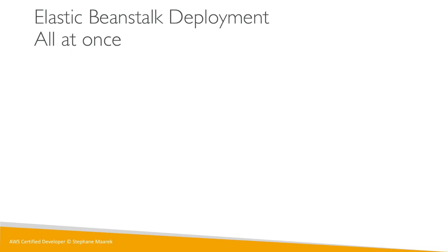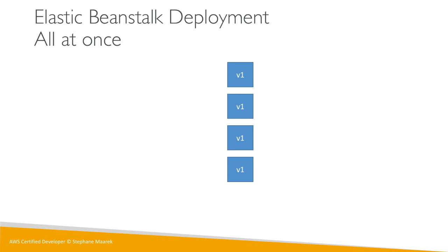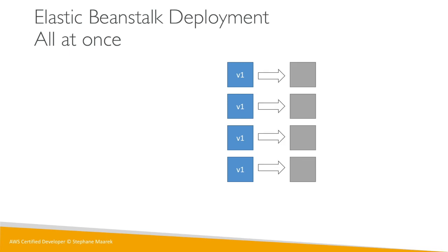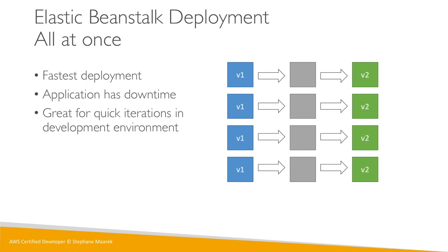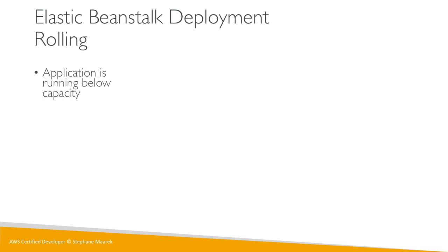Let's talk about 'All at Once' with diagrams. We have four EC2 instances all running version 1 (blue). We want to deploy v2, so Elastic Beanstalk stops the applications on all EC2 instances — they go gray, running nothing — and then deploys v2 to these instances. It's the fastest deployment, but the application has downtime since all instances are gray in the middle and can't serve traffic. It's great for quick iterations in development environments when you don't care about downtime, and there is no additional cost.